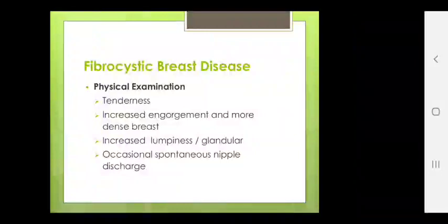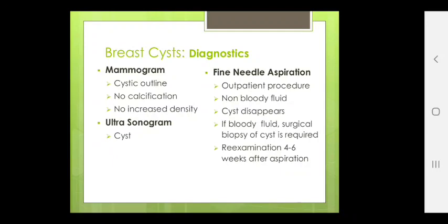For breast cysts, diagnostic tests are mammogram, ultrasound and fine needle aspiration. Fine needle aspiration is an OPD procedure. Non-bloody fluid — cyst disappears. If bloody fluid, surgical biopsy of the cyst is required. Re-examination 4 to 6 weeks after aspiration.